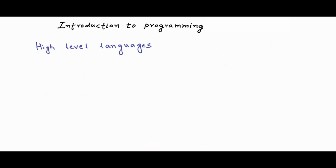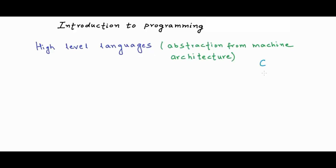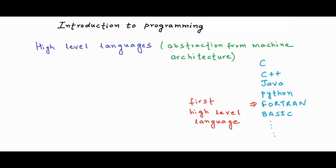A high level language is supposed to have more elements of natural language and it's supposed to make the life of a programmer a lot easier, because he will not have to care about all the detailed low level specifications of the machine. High level languages give you abstraction from machine architecture. Many high level languages have been developed to date — we have C, C++, Java, Python, and a couple of older ones like Fortran and Basic, and the list goes on. Fortran was the first high level language, developed by IBM. Even with high level languages, we cannot skip the basic rule that finally the instructions that will be executed have to be in machine language.